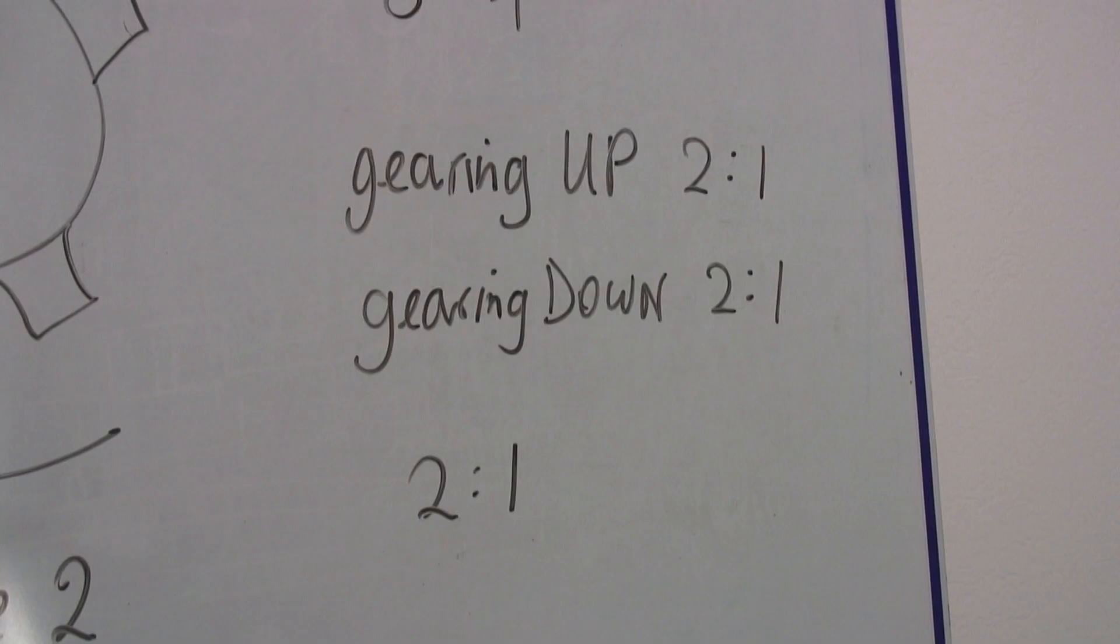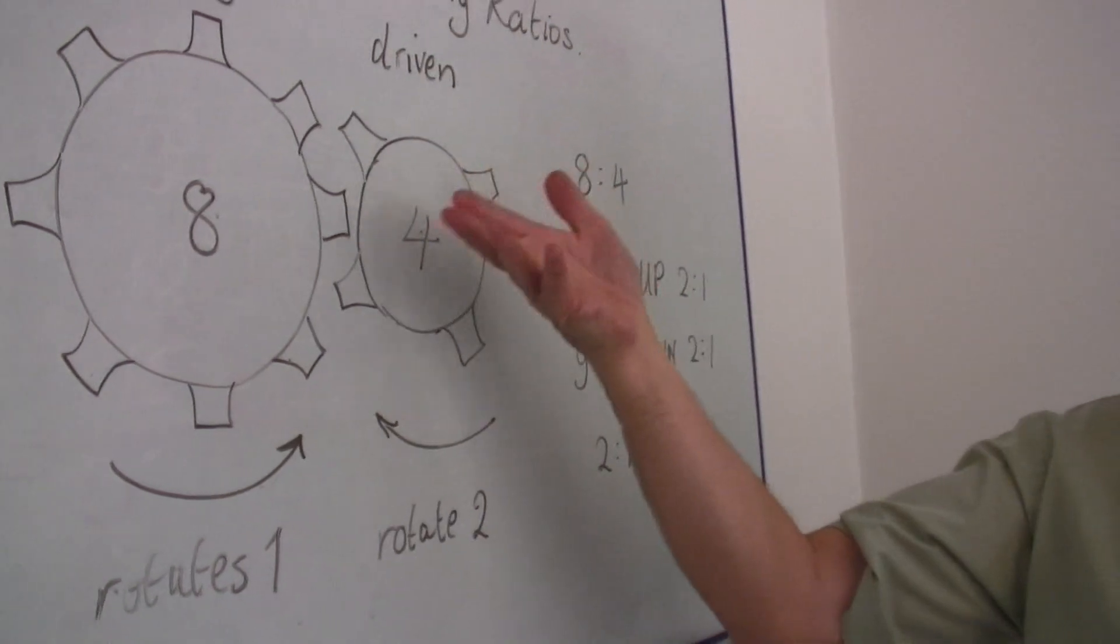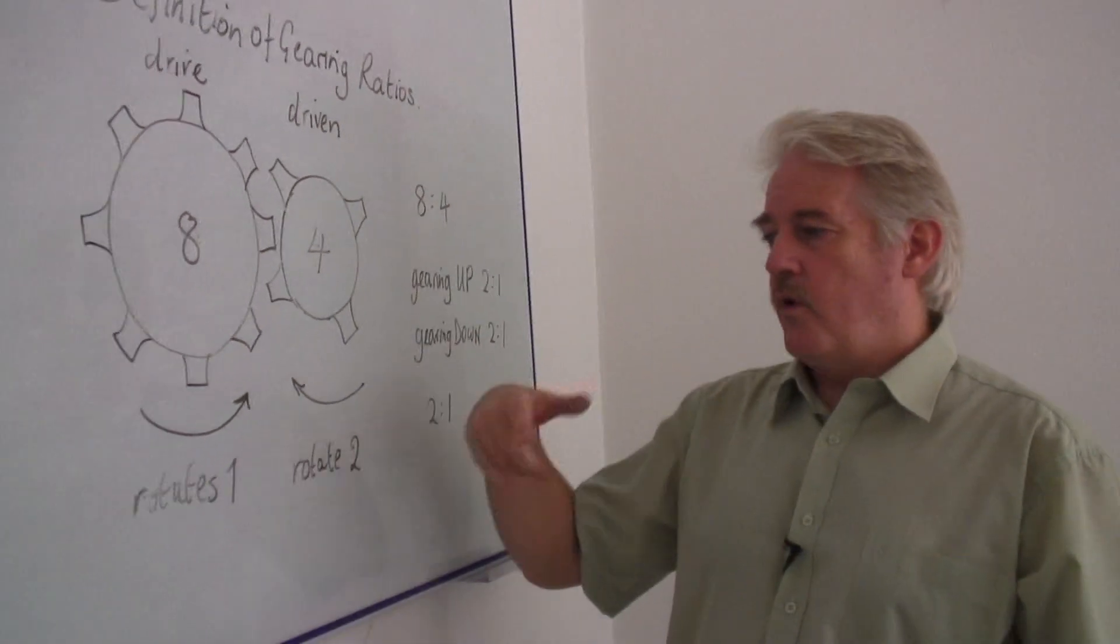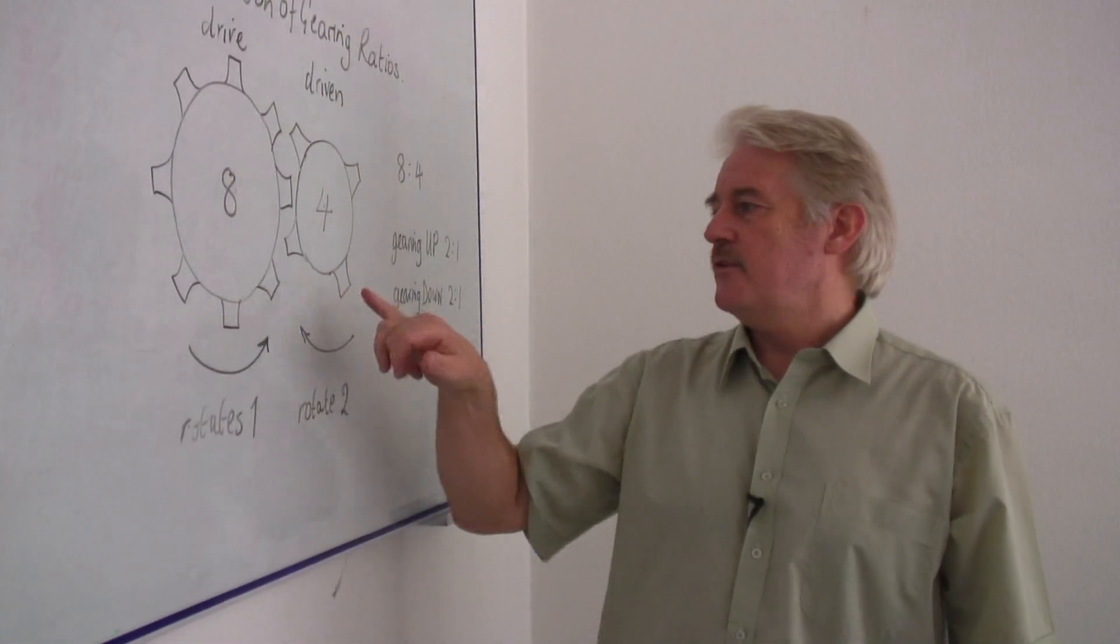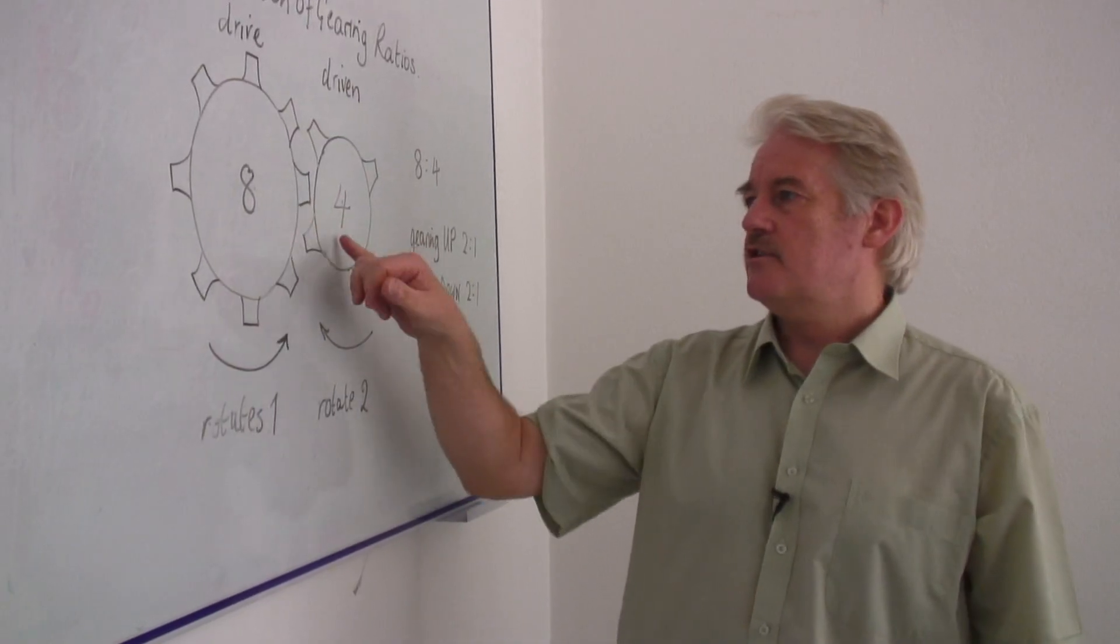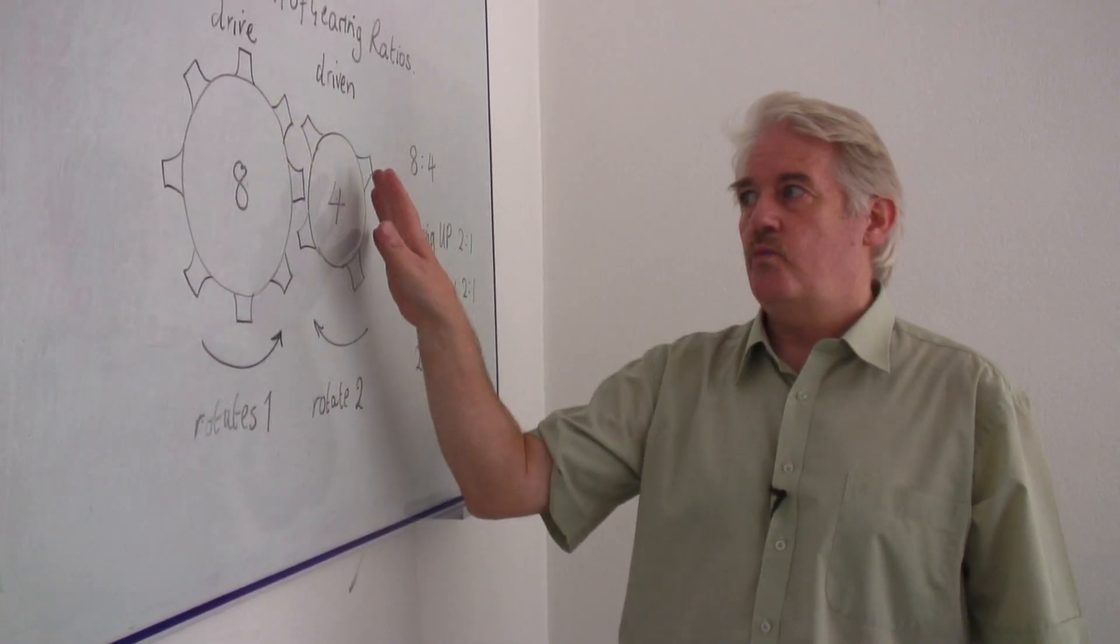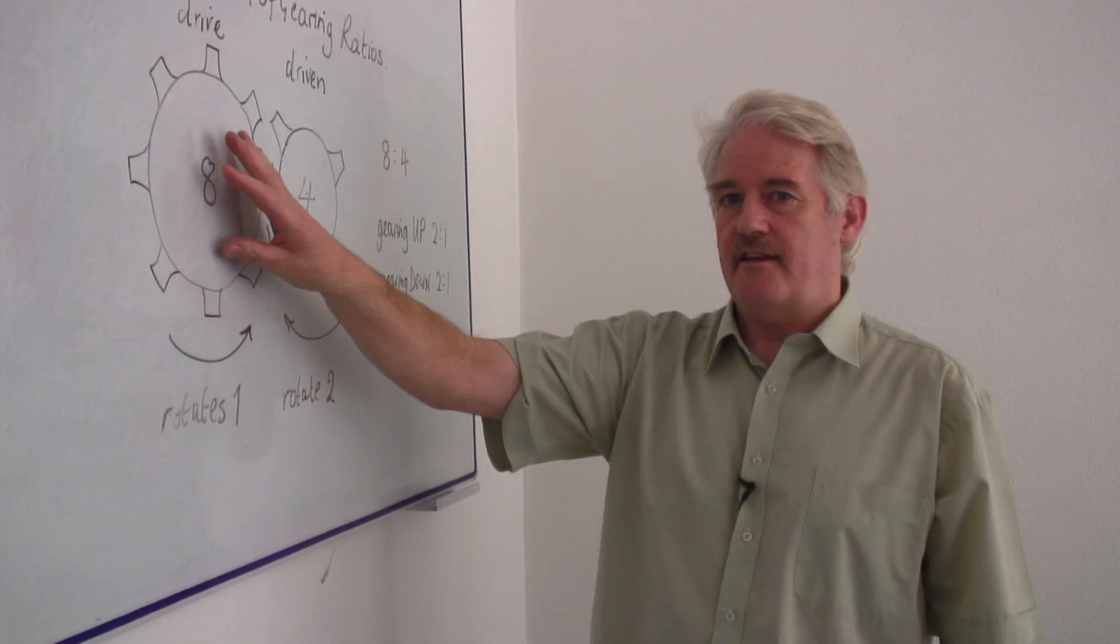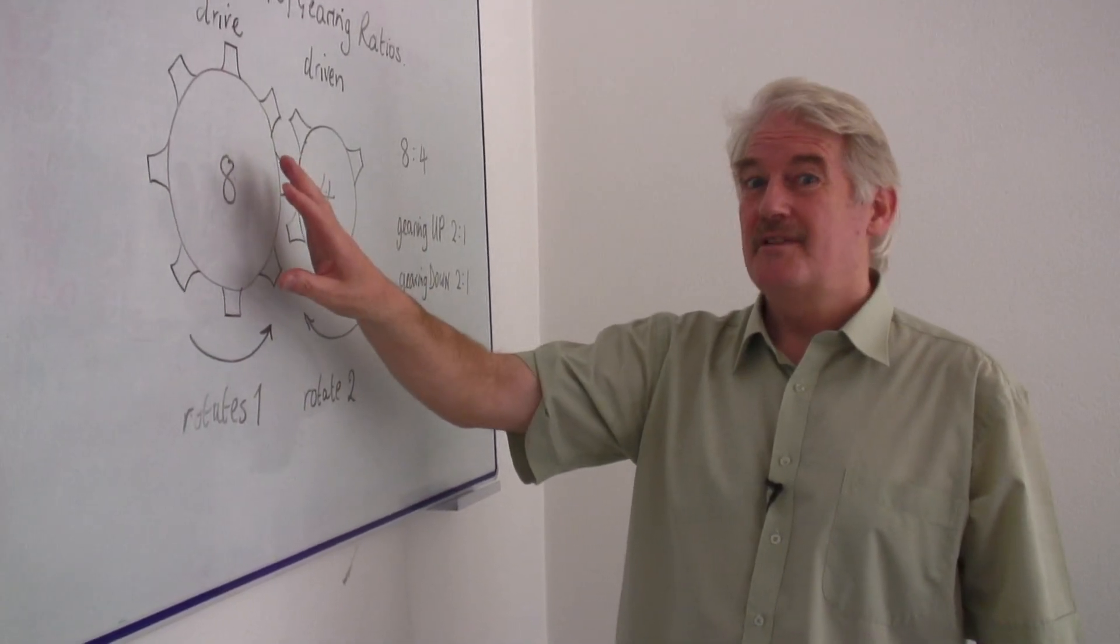So don't get confused. We either gear up or we gear down. Whatever happens, it's the number of teeth on the wheel that tells me how fast one wheel will go compared to the other. It's very simple. Keep it simple.